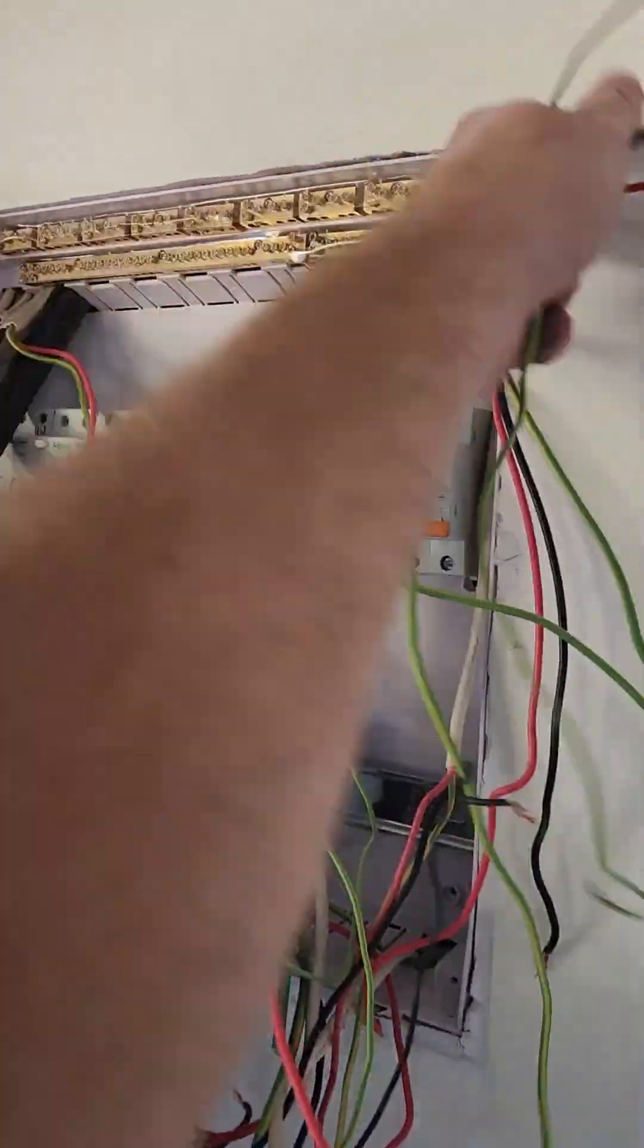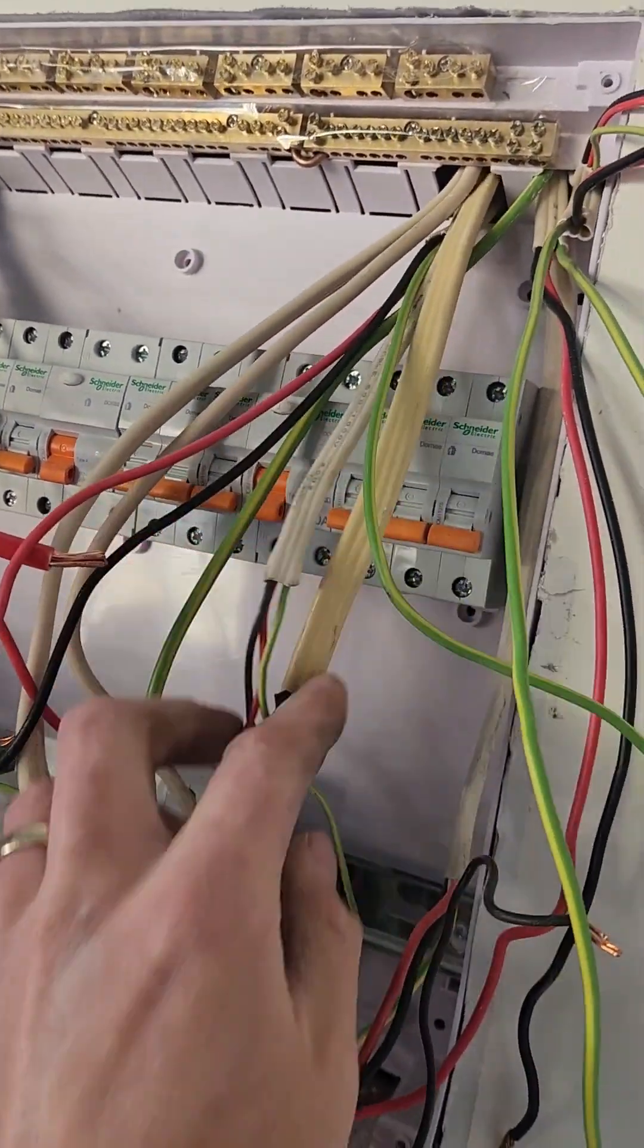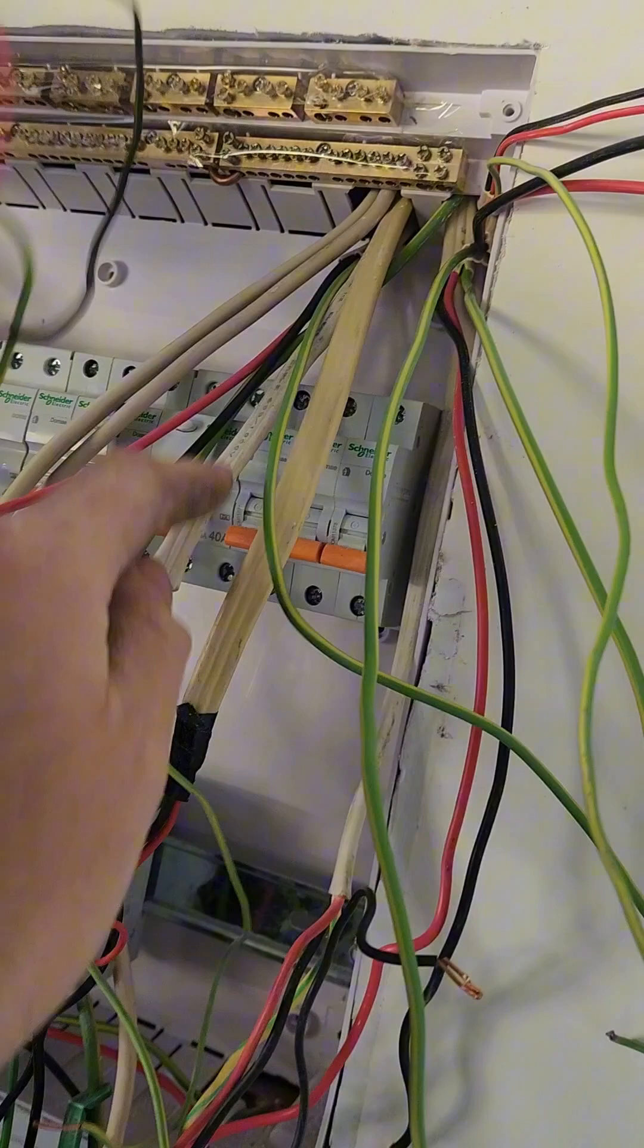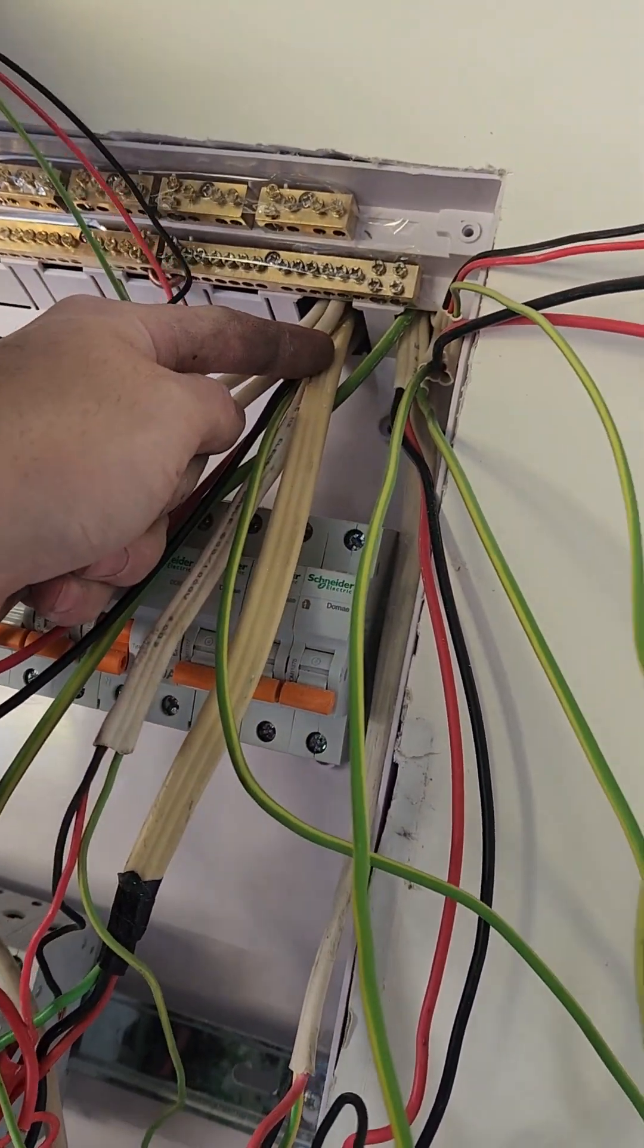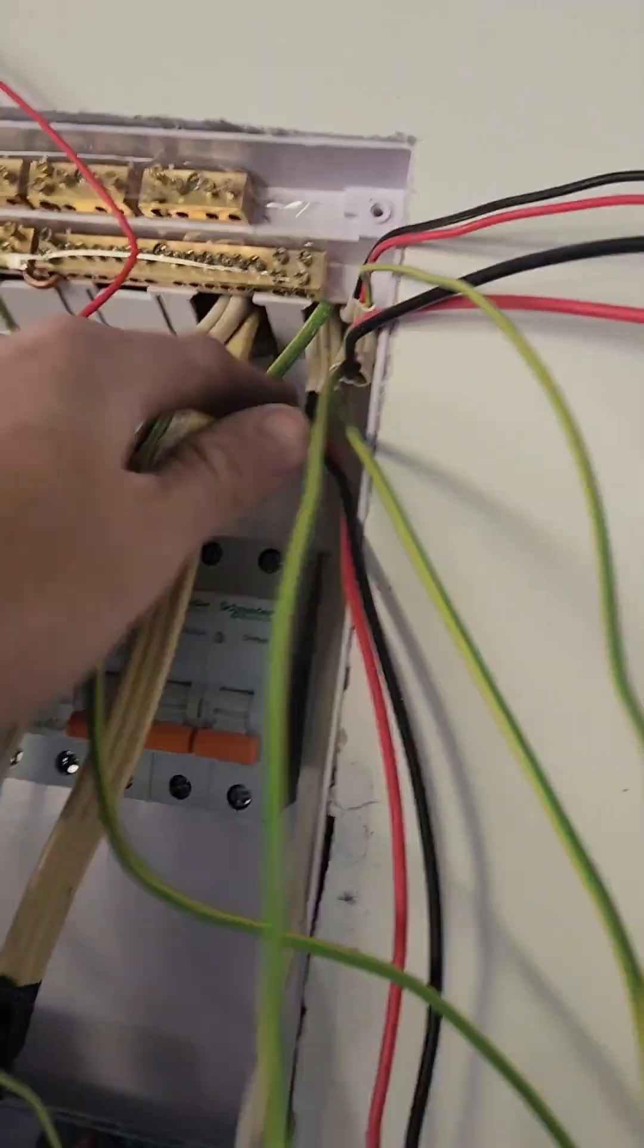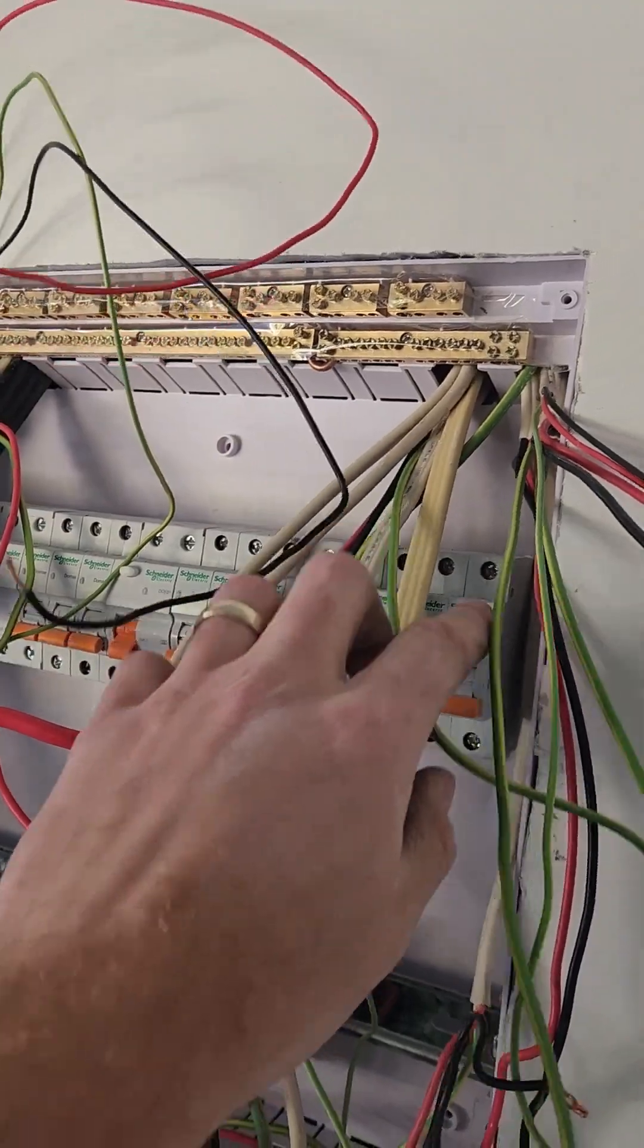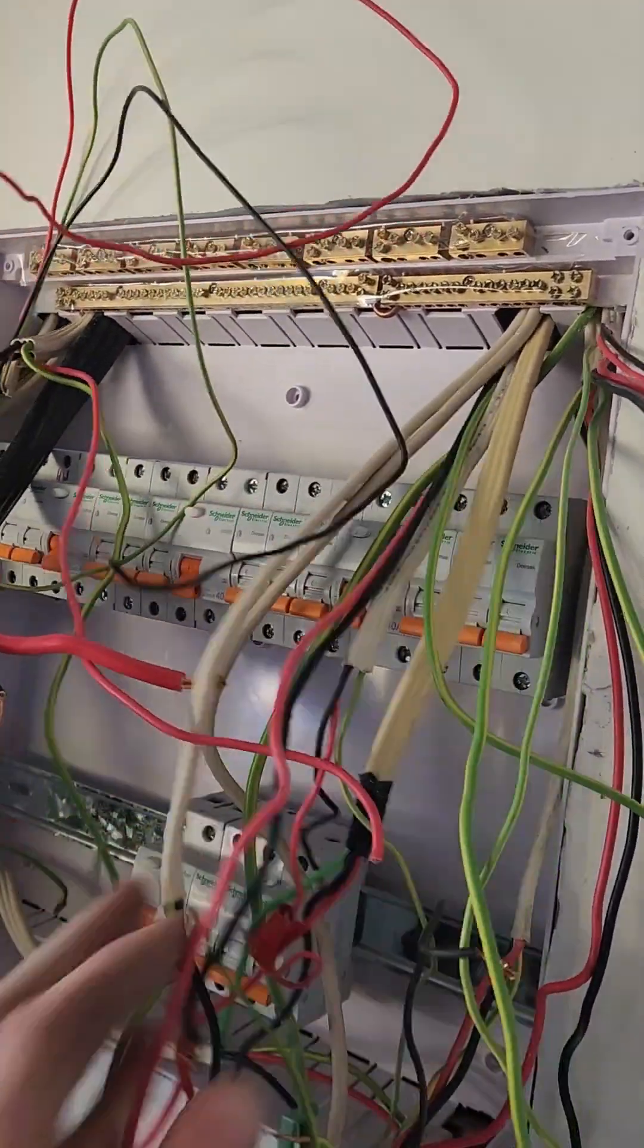Alright so we've got the new switchboard in and now we're just stripping the TPS, which is the white cable. Instead of at the old switchboard location we're stripping it up to here where it enters the board. Basic insulation can't be in the roof space so we have to stop just shy like these ones here. We'll get those stripped up, we'll make the earths off and then we'll start making the neutrals and the lives off.